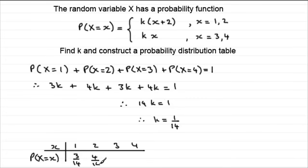And if you fill in the other ones, for three, it was three k, so that'd be 3/14. And for four, again, it was four k, so that'd be 4/14. And, again, double check here, that comes to a total of 14/14, which is one. So there's our probability distribution table.